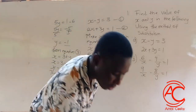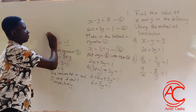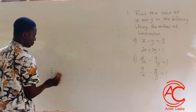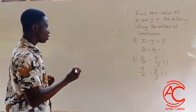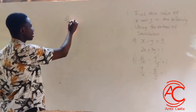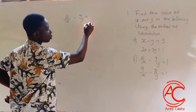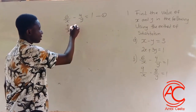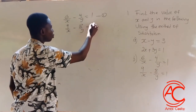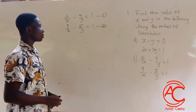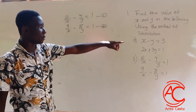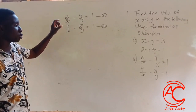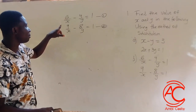Now let's move on to the second part, part D. I'm going to write the first one as equation 1: 6 over x minus 4 over y is equal to 1. And then 9 over x minus 8 over y is equal to 1, which becomes equation 2. To use the method of substitution, we need to make one variable the subject, so I'm going to pick equation 1.